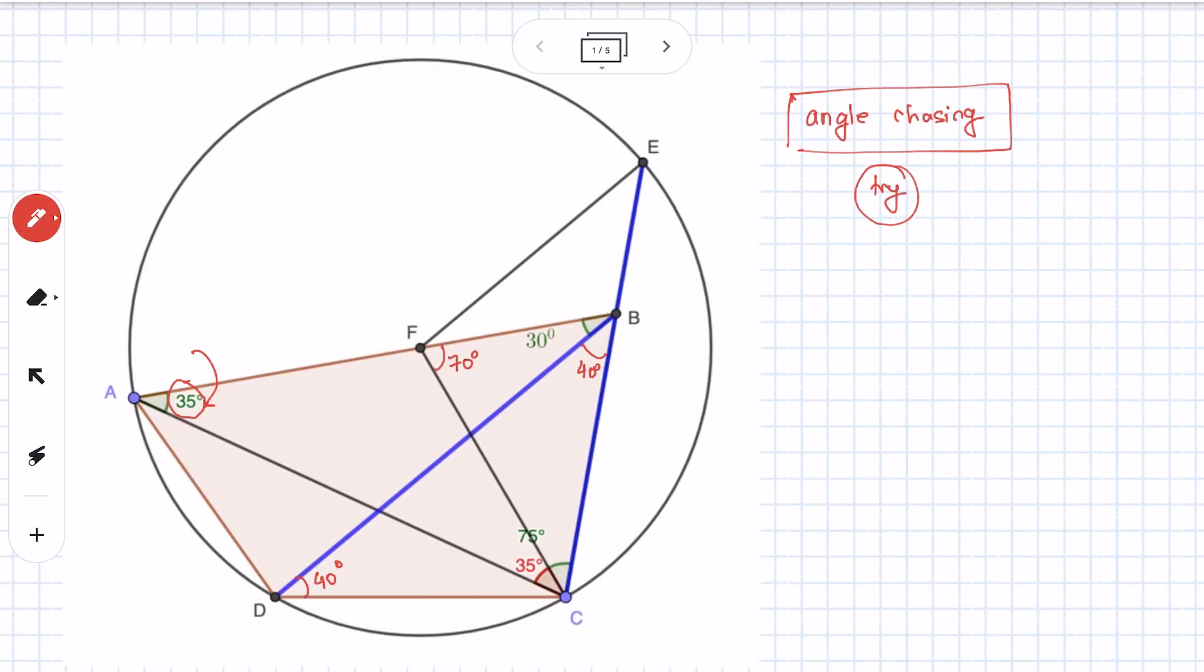Now that this part is sorted, notice that CB is equal to CF. CB and CF are equal because these two angles are 70 degrees. And CF and CD are equal because CB and CD are equal. So this is given.